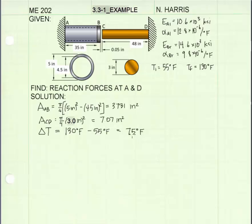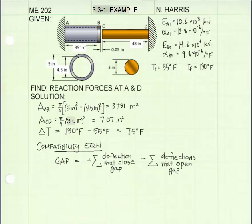The next step is to come up with a compatibility equation. Let's think about what's going to be going on in this problem. Members AB and CD are both going to increase in length as a result of the change in temperature. So that will be a positive deflection.